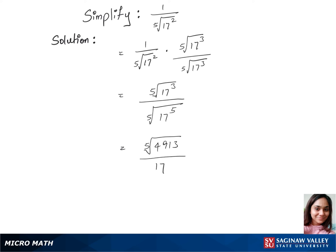That equals 17, because the 5th root and power of 5 cancel each other out. So our final answer is ⁵√4913 over 17.